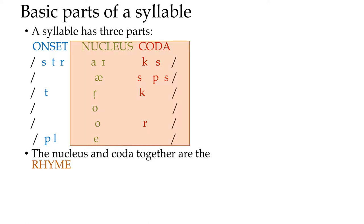The nucleus and coda together are what we call the rhyme, because in Western rhyming schemes this is the part that has to stay the same. So what rhymes with 'strikes'? Maybe 'pikes' or 'bikes' — the '-ikes' part stays the same. What rhymes with 'asps'? 'Clasps' or 'rasps.' What rhymes with 'Turk'? 'Work,' 'jerk,' 'murk' — the '-irk' part stays the same. That's why we call that part the rhyme.